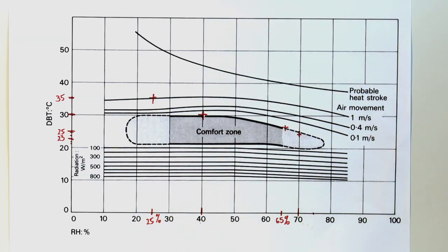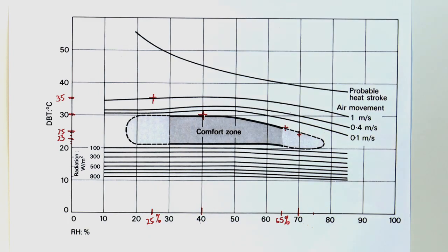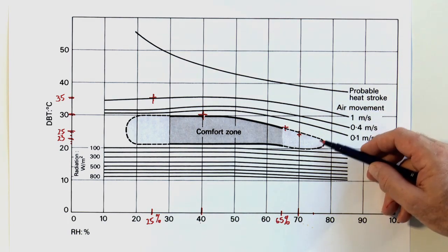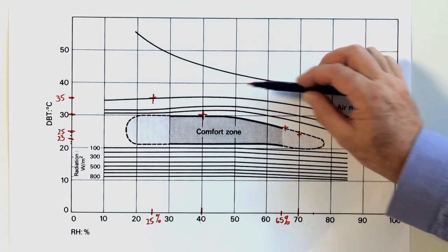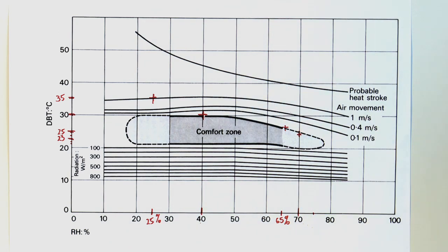But this is the beauty of the bioclimatic chart. It tells us how we can achieve a comfortable condition. By introducing air movement we can pull the temperature down to a comfortable temperature, the comfort zone.